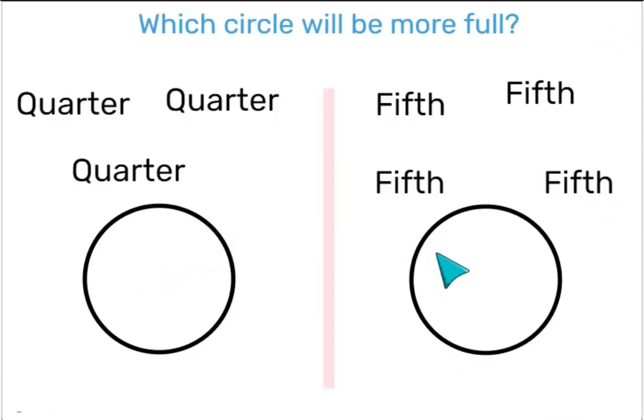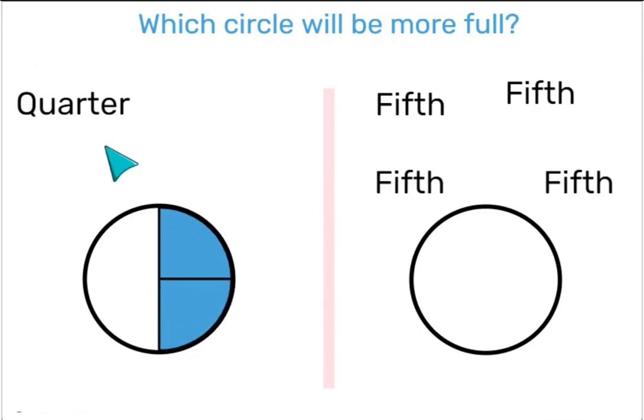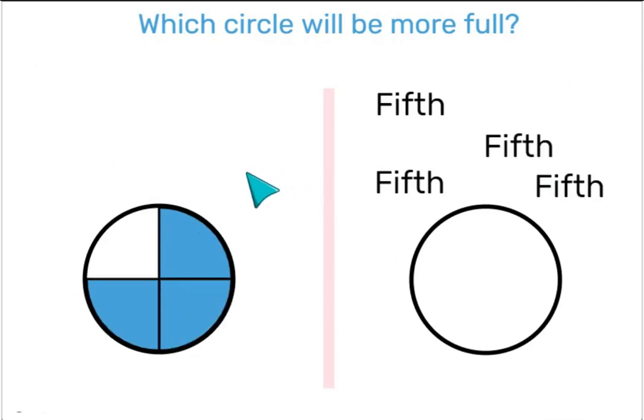Which of these circles will be more full? I have 3 quarters here and 4 fifths, so I know that each of these circles will be missing exactly one piece. We saw before that a fifth is smaller than a quarter. That can help us answer this question.